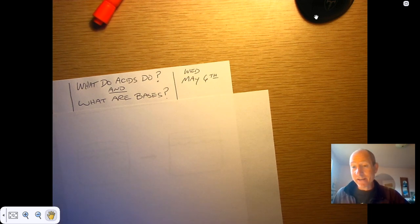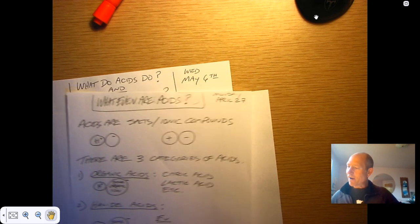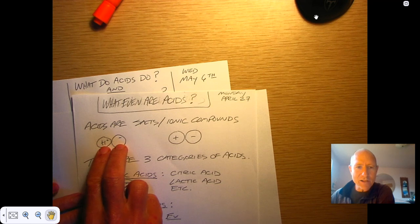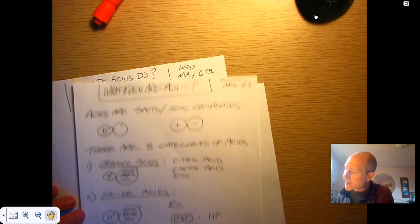So, in previous lectures, we learned what even are acids, and we learned that they're salts where the cation is a hydrogen ion. And there's different kinds of acids.